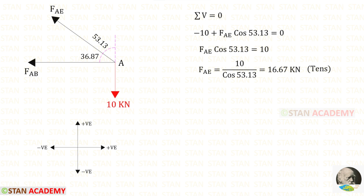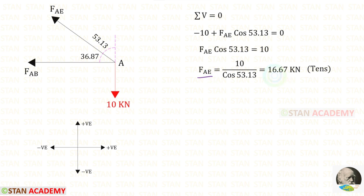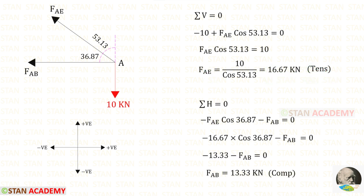First we have to apply sigma V = 0, because there will be only one unknown. 10 is acting downwards, so it will be negative. FAE is inclined; we have to make it vertical. To make it vertical, we need 53.13°. Since it is acting upwards, it will be positive, and we multiply with cos 53.13°. For FAE we will get a positive value — that means it is tensile.